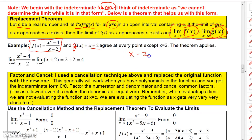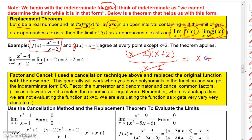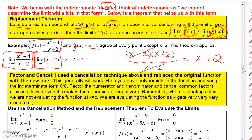Since in a limit x never actually equals 2, it just approaches 2, these two functions are effectively the same. So we can replace the limit of f(x) with the limit of g(x) = x+2. Since that's a polynomial, just plug in 2: 2+2 = 4. There are two main techniques: the cancellation technique and the rationalization technique.